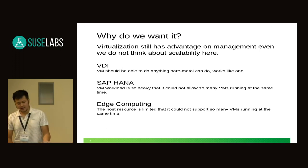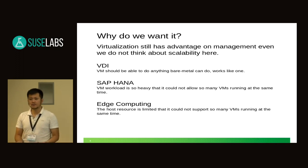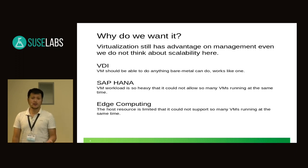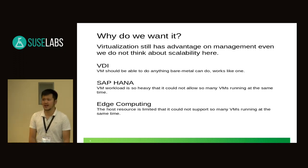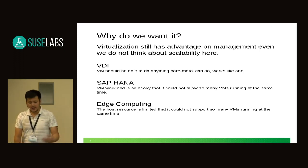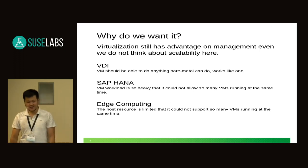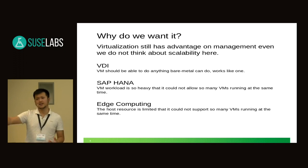SAP HANA has high requirements for the VM. Sometimes you can't have too many VMs because they'll drag down the host and make the whole service slow. So in that case we don't want so many. And as for edge computing — this conference is talking about edge computing — it's like some server or device on the remote side, close to your end user.